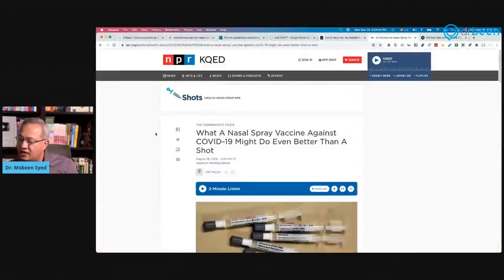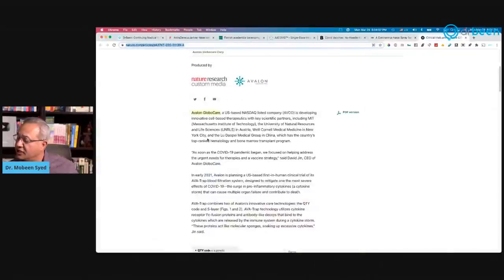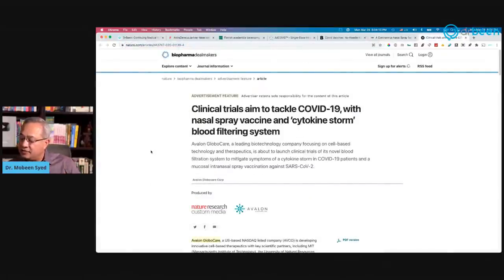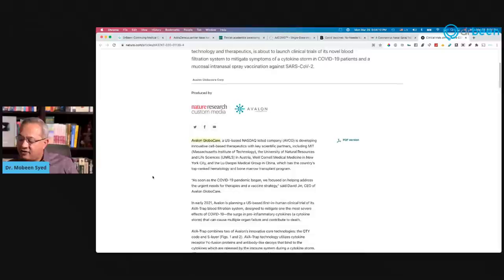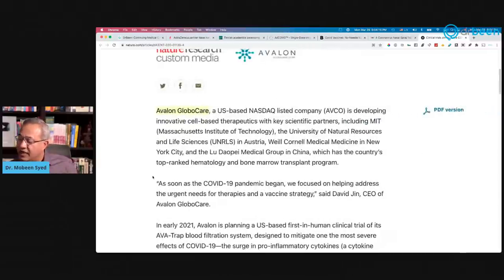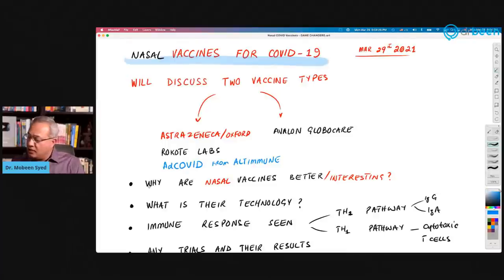This is an article about the nasal vaccines, interesting article. This is another article in NPR about the nasal vaccines. And then this is another drug company, Avalon Global Care, which is another company that is making nasal vaccines. So quite a few companies that are doing it. So let's now see what are they doing?